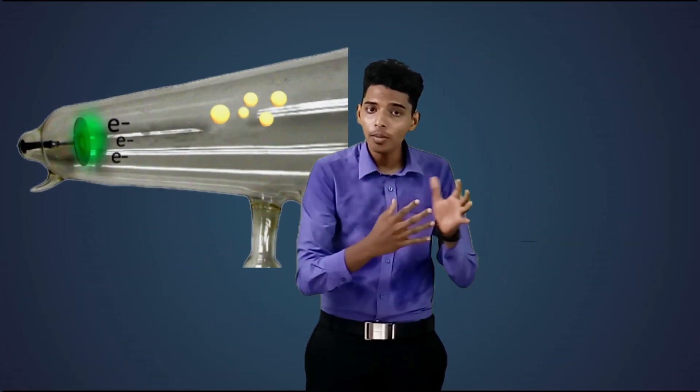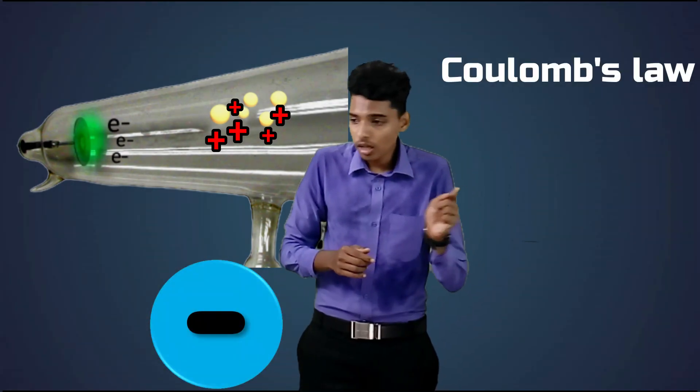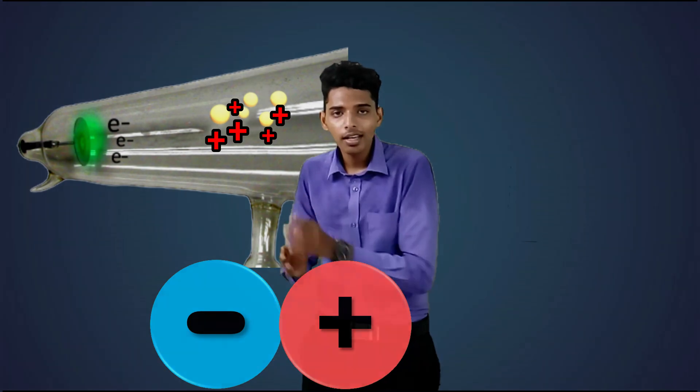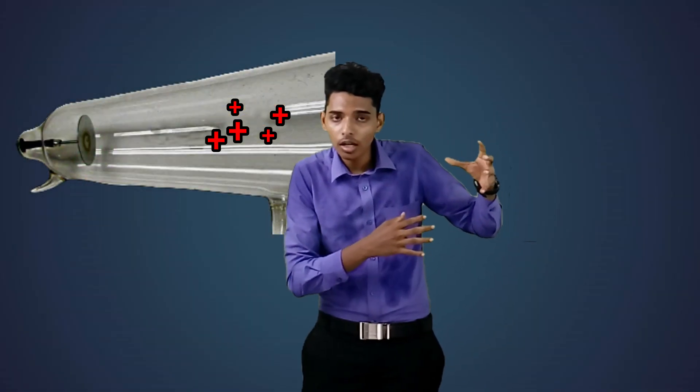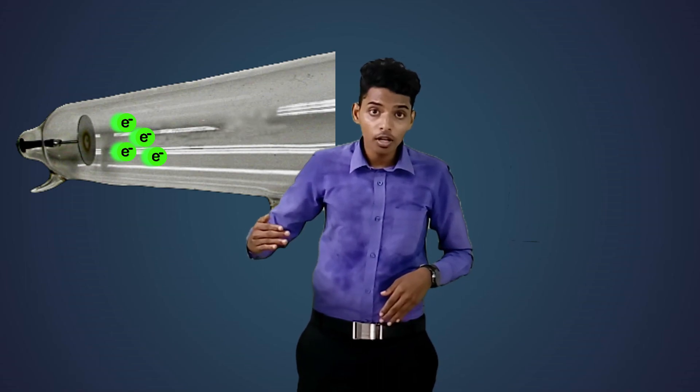Due to this chain reaction, an enormous amount of positively charged ions are created. As opposite charges attract, these positively charged ions are attracted towards the cathode. The cathode attracts the positively charged ions and repels an enormous amount of electrons with high velocity. This is the principle going on inside the cold cathode ray tube to produce high-velocity electrons.